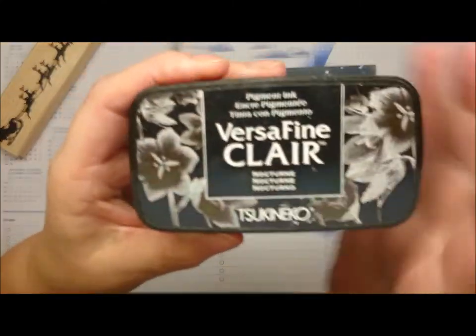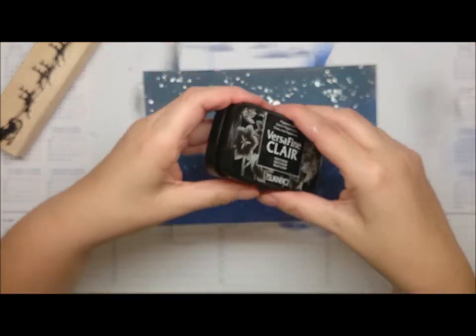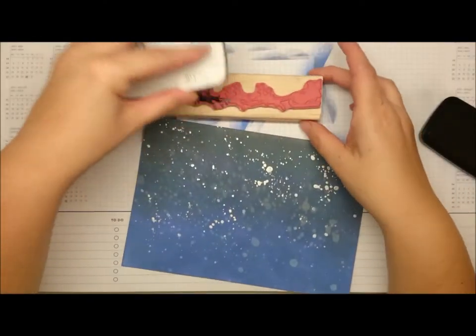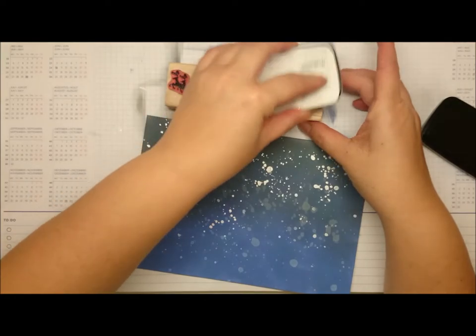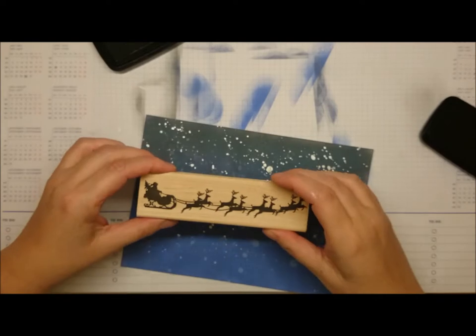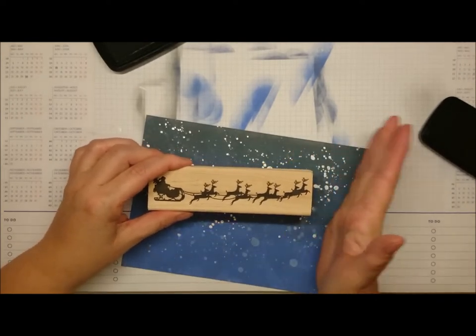This is Nocturne VersaFine Clear ink and I'm going to use that to stamp my sleigh. I clean it in between the StazOn and this one with the Simon Says Stamp cleaner just to be sure.